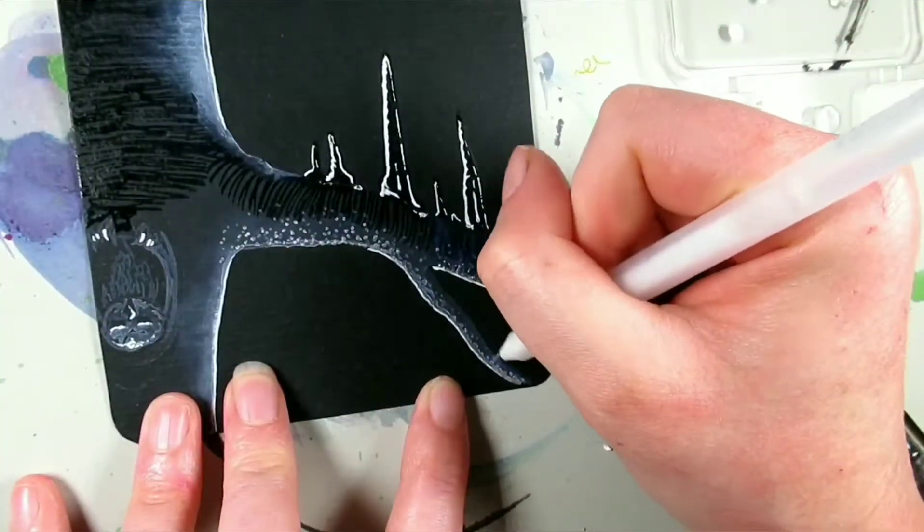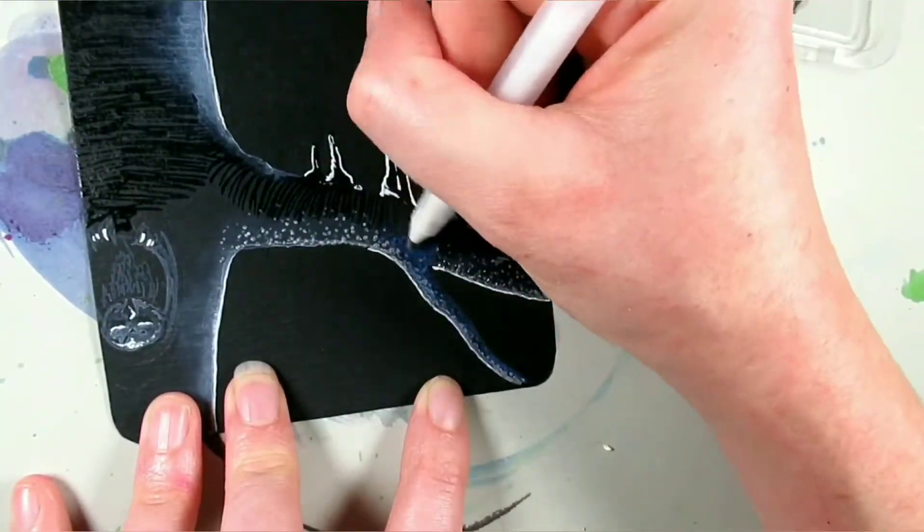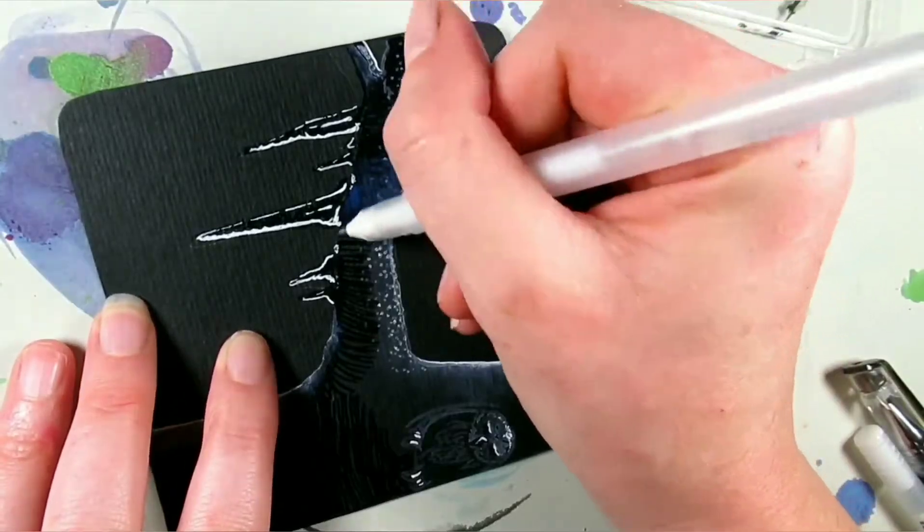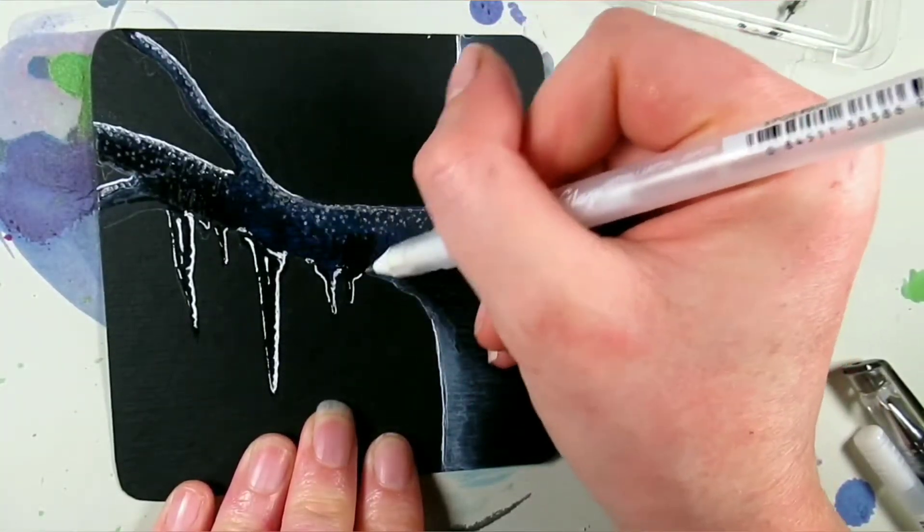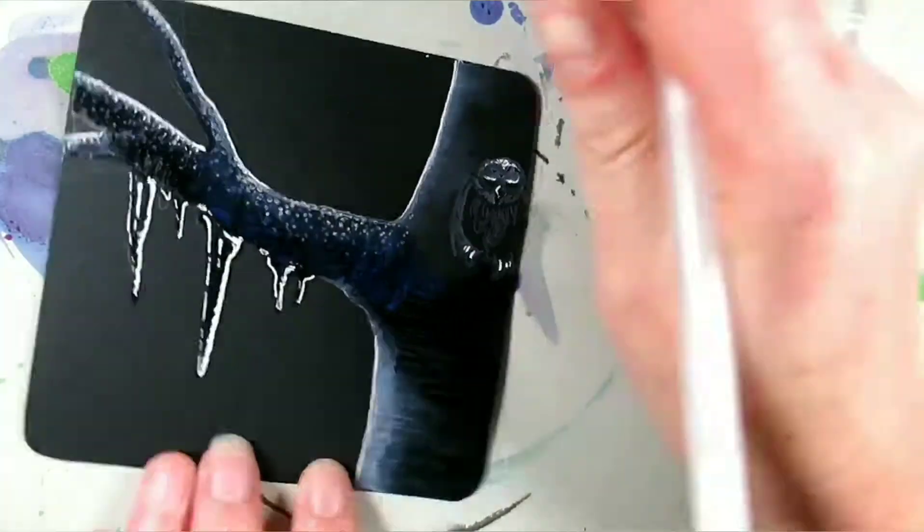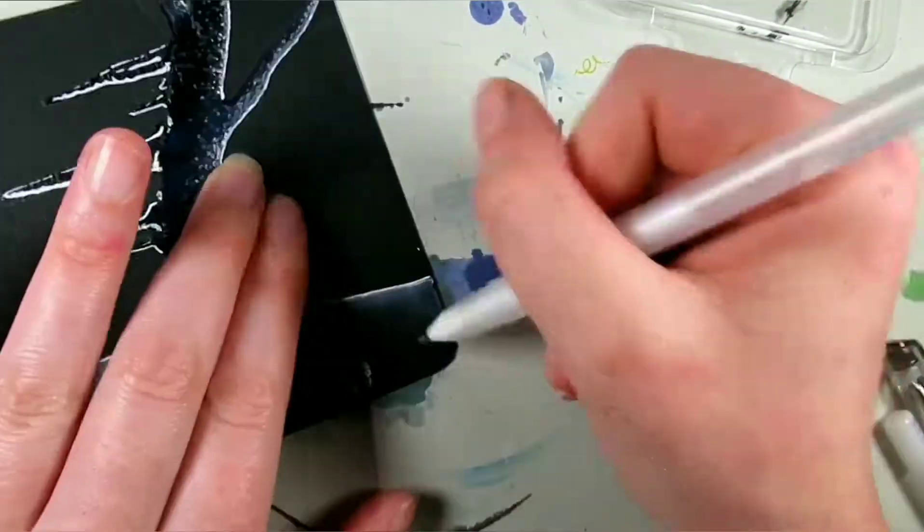To make sure that the tree stood out from the background I decided to add some additional texture in there with the glaze pen. It's a bit weird because it sort of goes down a weird blue color and then when it dries it's completely clear.